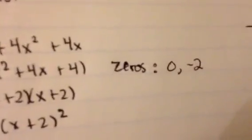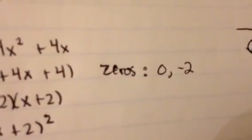So your zeros would be 0 and negative 2, and that is what the graph is going to look like in a little bit, something similar to that.